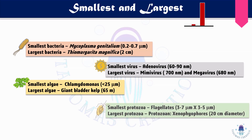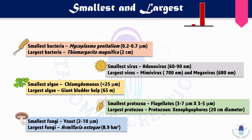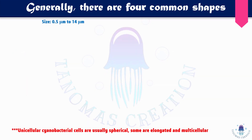The smallest protozoa is flagellates, with an area of 3–7 by 3–5 micrometers. The largest protozoa is Xenophyophore, with a diameter of 20 centimeters. The smallest fungi is yeast at 2 to 10 micrometers, and the largest fungi is Armillaria ostoyae, with a surface area of 8.9 kilometers square. In conclusion, the smallest microorganism is virus and the largest is fungi.